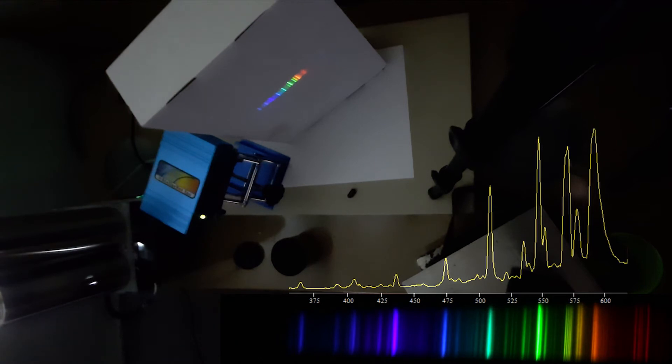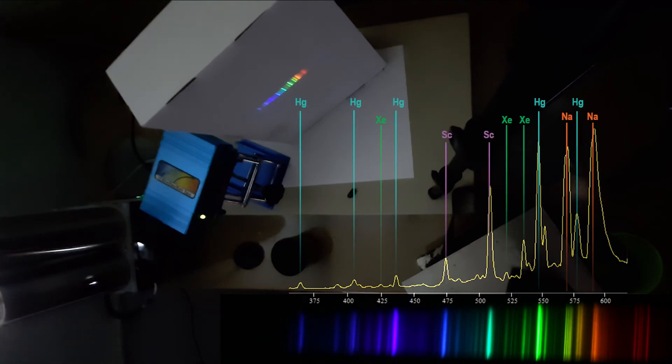On our spectrum, we can observe sets of lines that belong to different elements. In this case they are mercury, xenon, scandium and sodium.